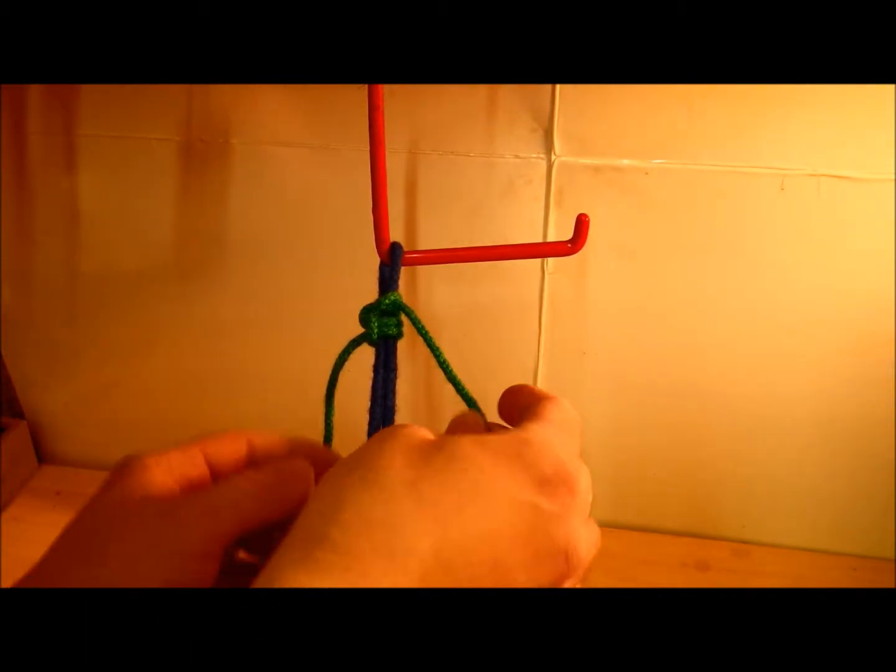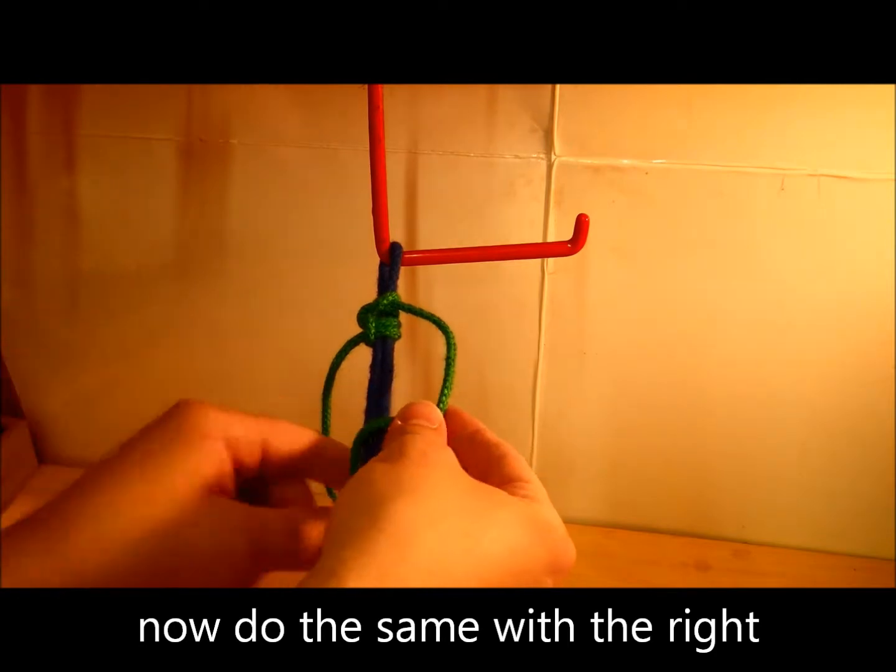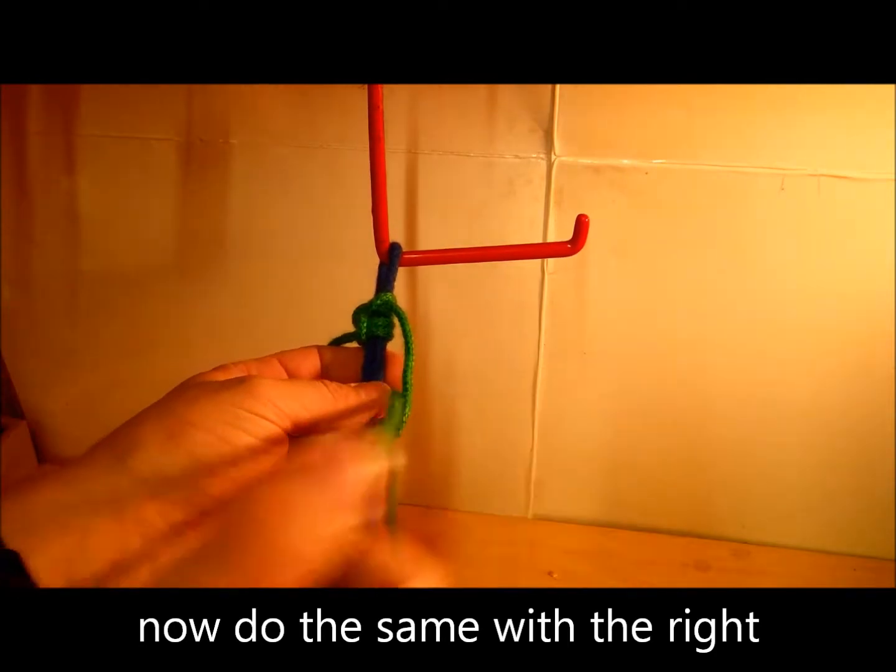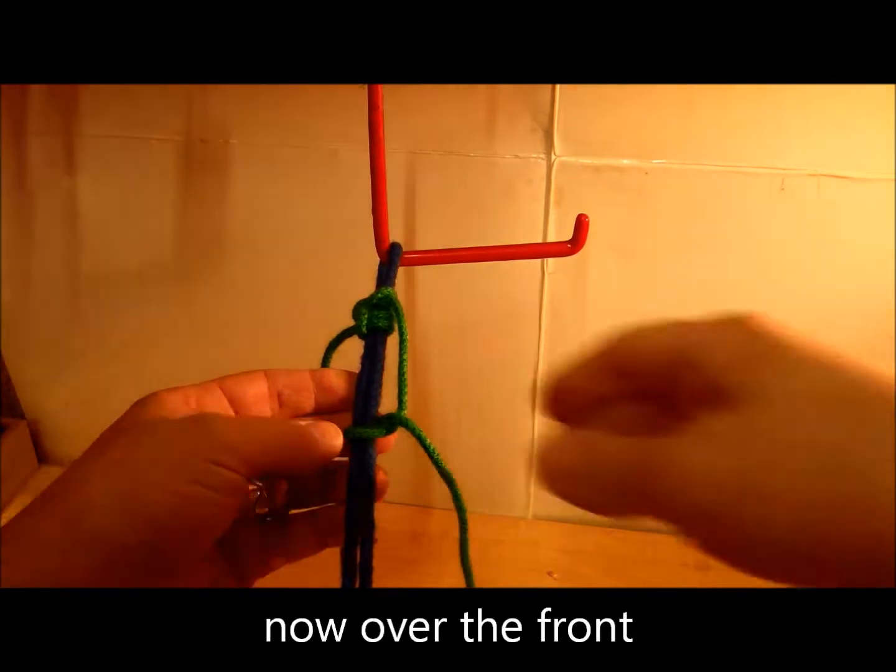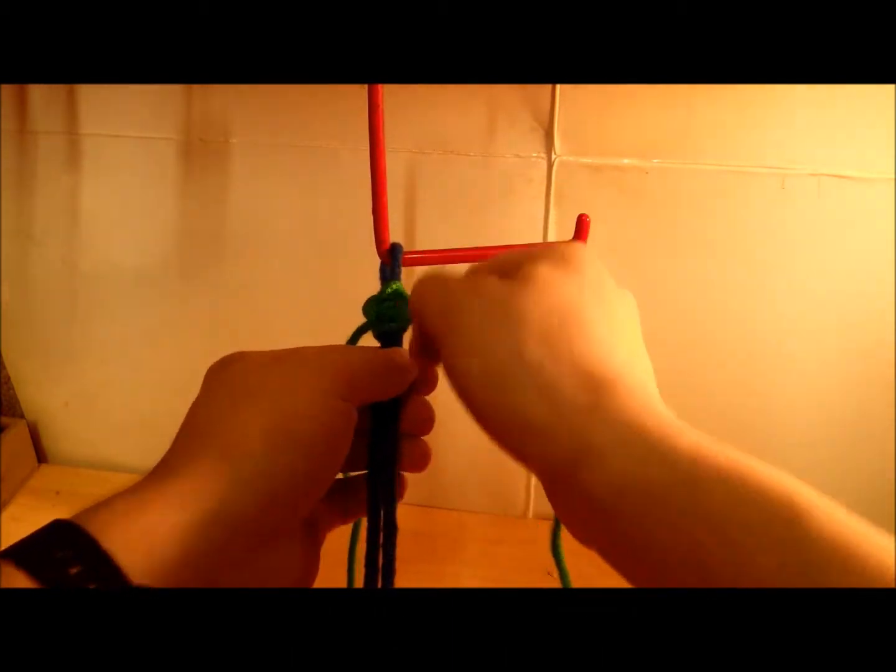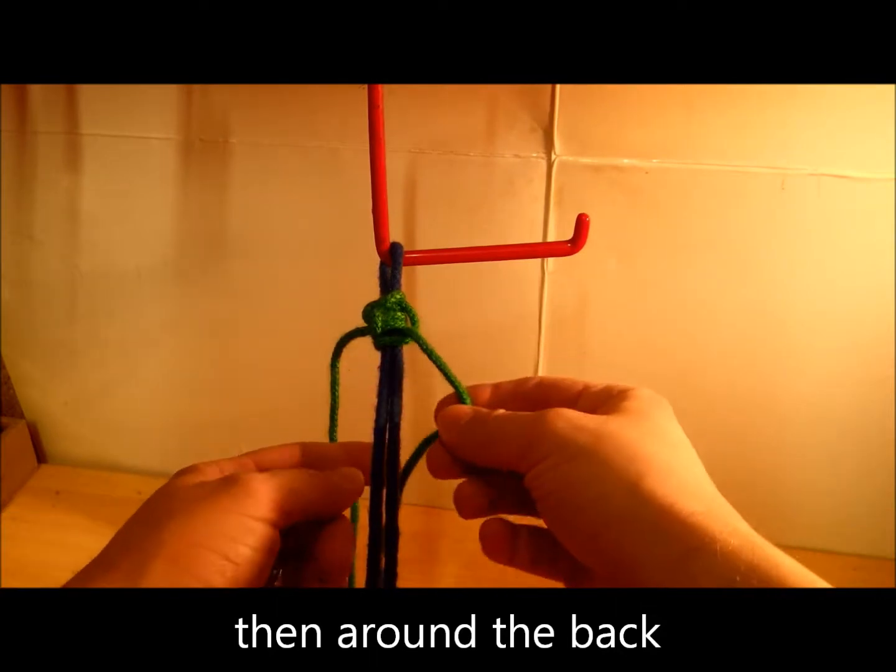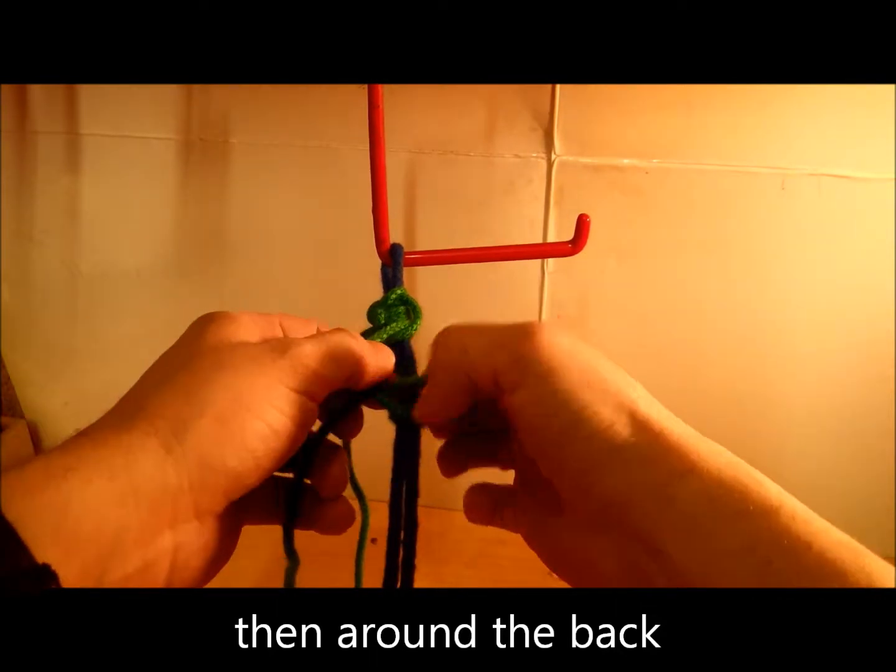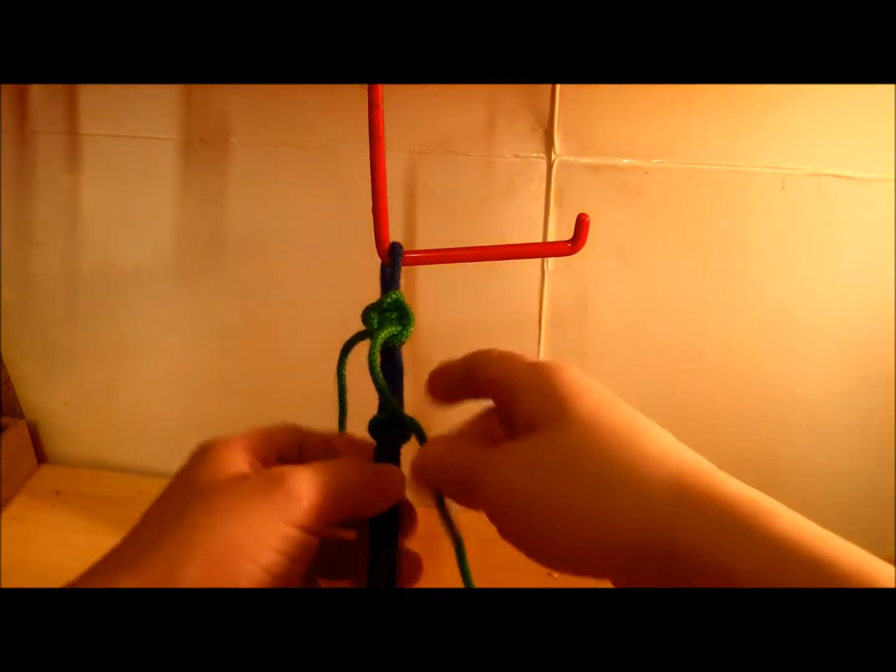I'm going to move on to the right side now. That's going to go over the front, around the back, through the hole. A nice ball there. Half hitch, it's going to be the opposite this time, and it's going to go around the back, like so.